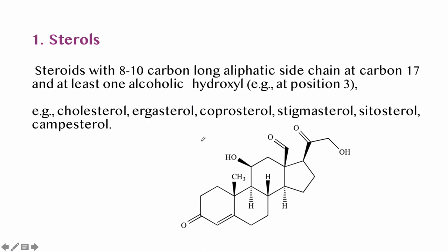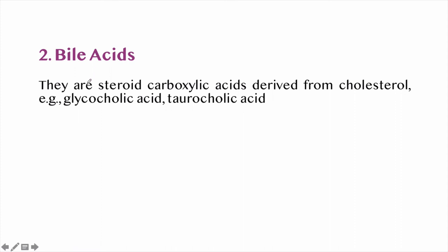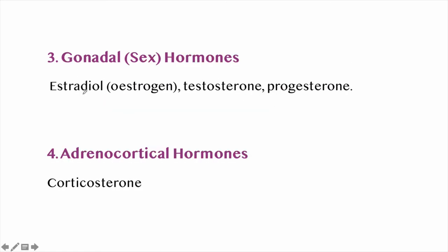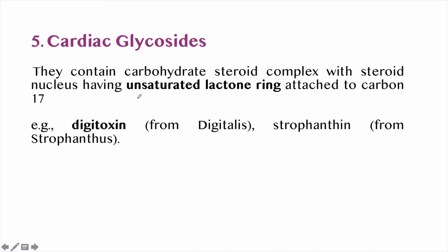Sterols contain an 8 to 10-carbon long aliphatic side chain at carbon 17. Examples include cholesterol, ergosterol, and coprosterol. Bile acids are steroid carboxylic acids derived from cholesterol — examples are glycocholic acid and taurocholic acid. Gonadal sex hormones include estradiol, estrogen, testosterone, and progesterone, while adrenocortical hormones include corticosterone. Cardiac glycosides contain an unsaturated lactone ring structure at carbon number 17 — example is digitoxin.